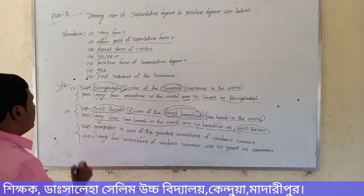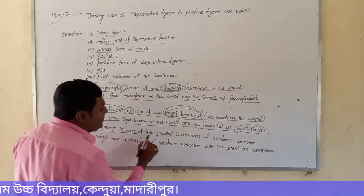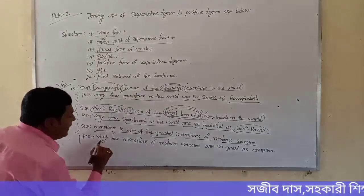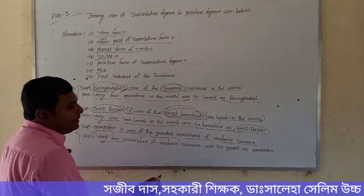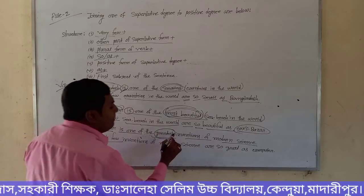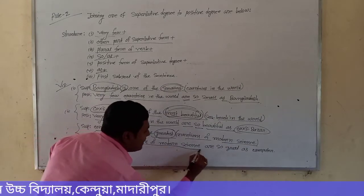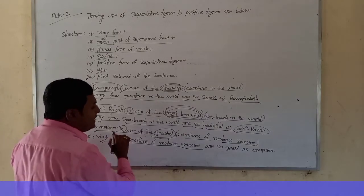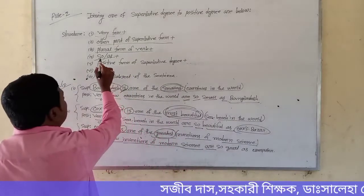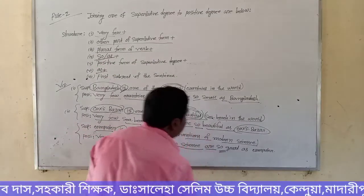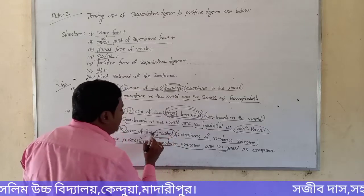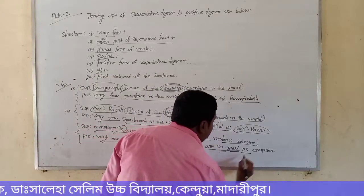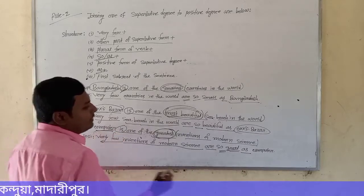Third — superlative: 'Computer is one of the greatest inventions of modern science.' Similarly, we take 'very few,' then other part — superlative is 'greatest,' other part is 'invention of modern science.' Plural form of verb: verb is 'is' (singular), we take plural form 'are.' From structure, so/as — we take 'so.' Positive form of 'greatest' is 'great.' Then 'as,' and finally the first subject: 'Computer.'